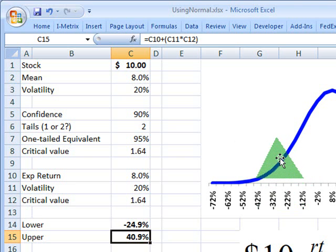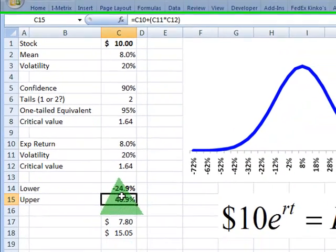And that gets me 40.9%. So that's going to be a line out here. And those two lines, they bound this curve in such a way that the area under the curve is 90% of the total area under the curve. So it's my 90% confidence interval on the returns.